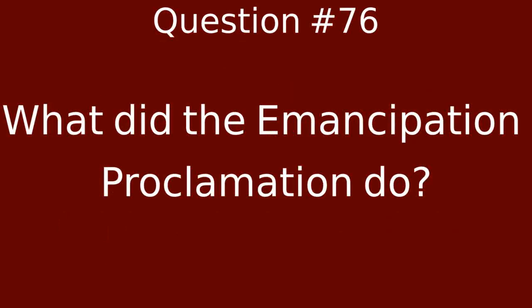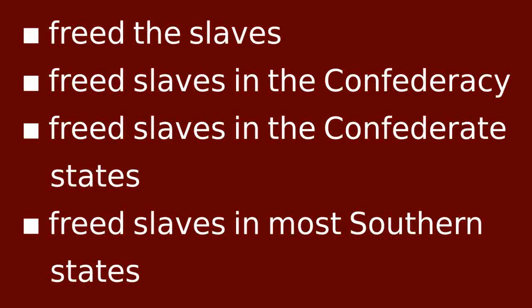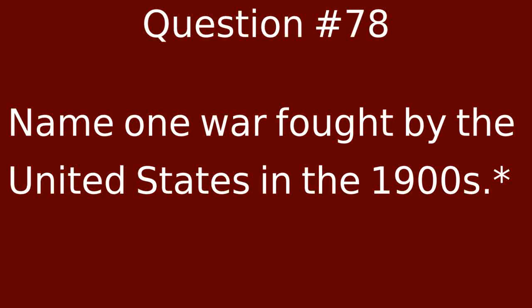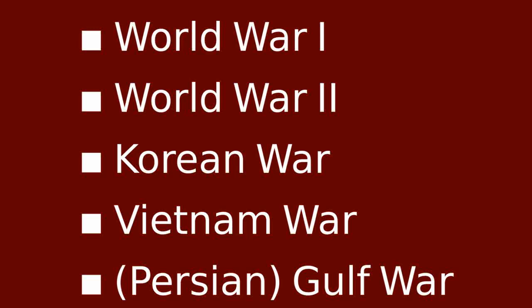What did the Emancipation Proclamation do? Freed the slaves. Freed slaves in the Confederacy. Freed slaves in the Confederate States. Freed slaves in most southern states. What did Susan B. Anthony do? Fought for women's rights. Fought for civil rights. Name one war fought by the United States in the 1900s. World War I. World War II. Korean War. Vietnam War. Persian Gulf War.